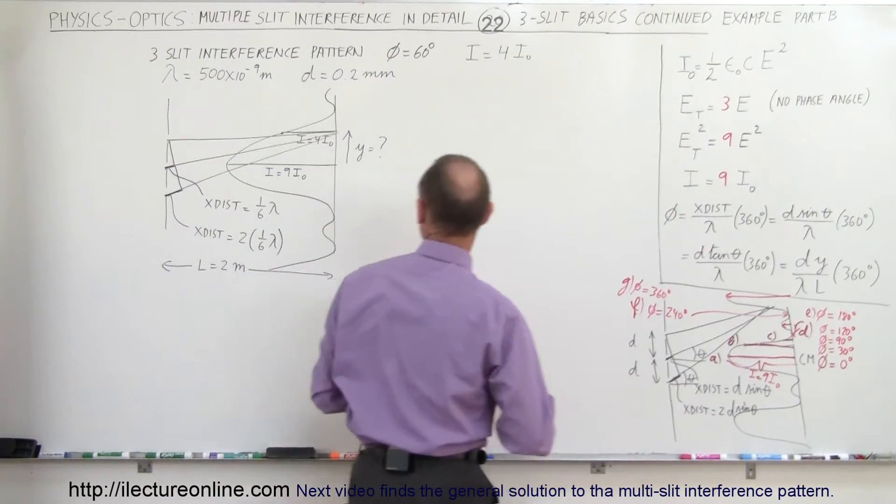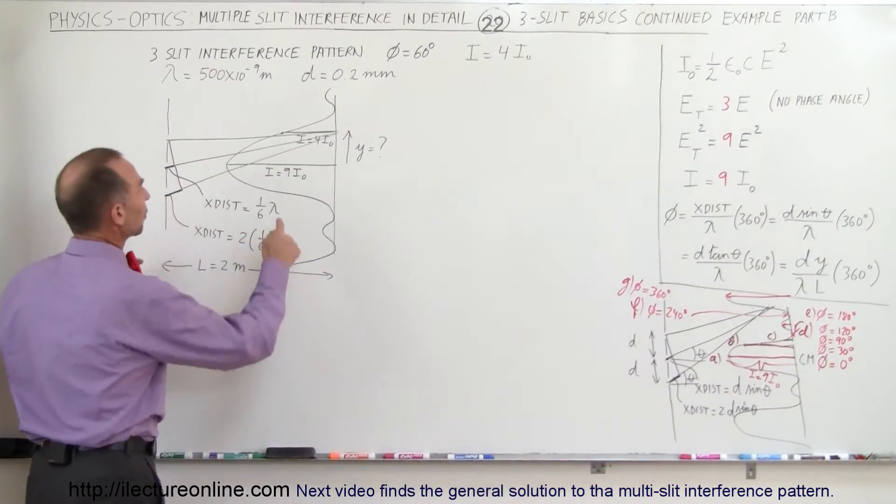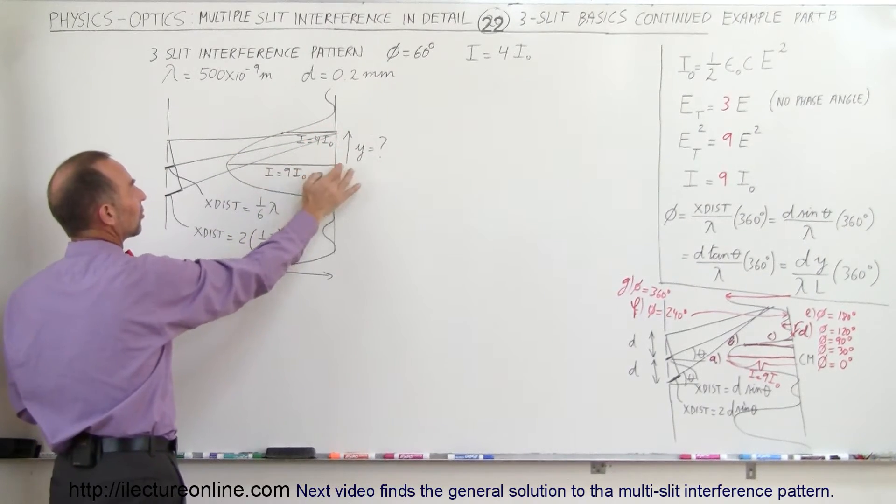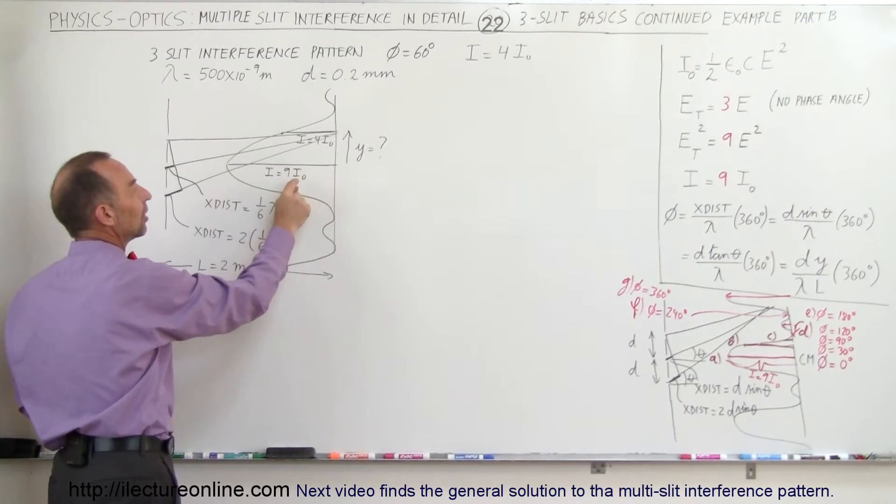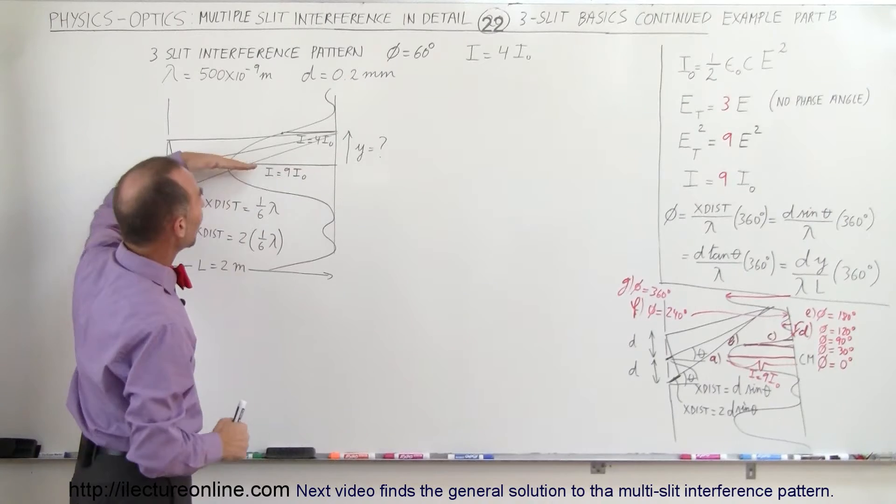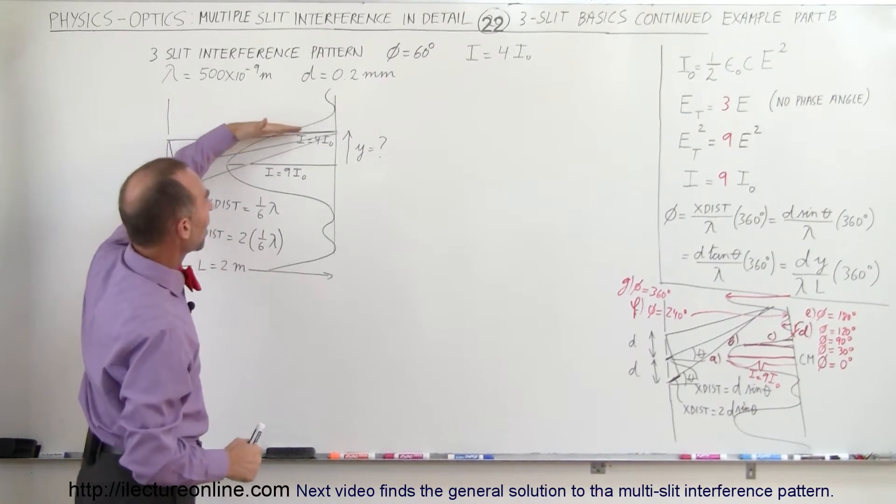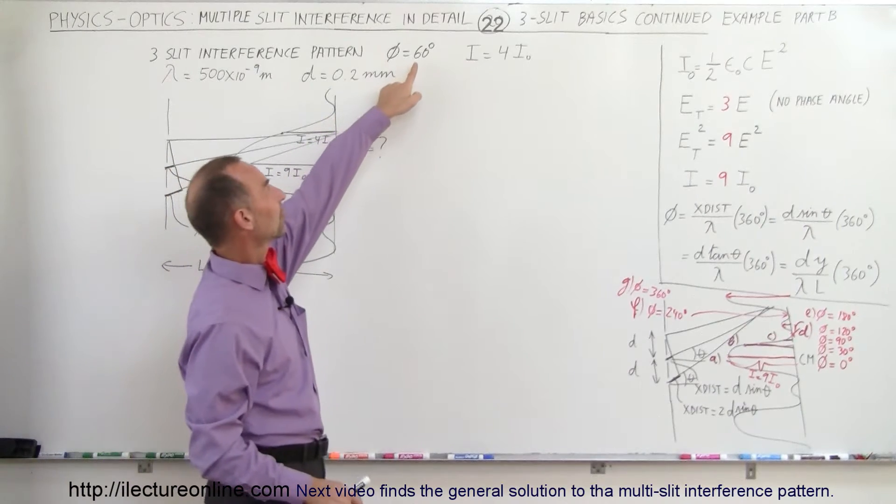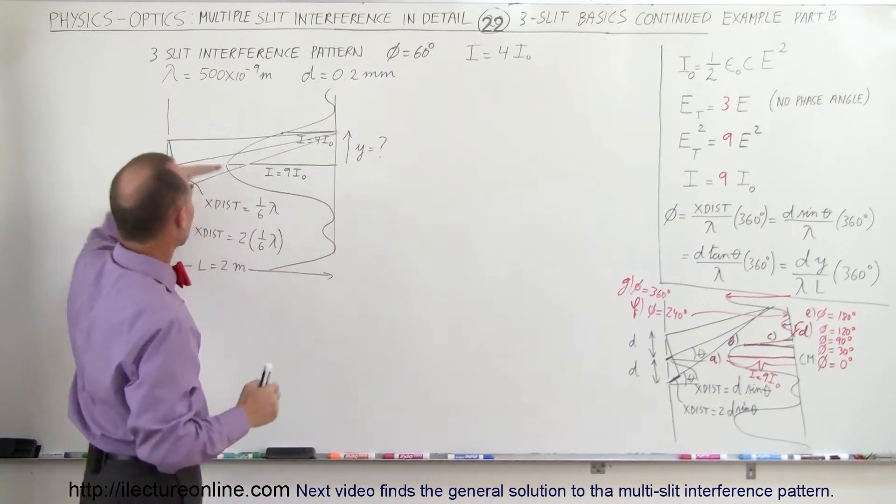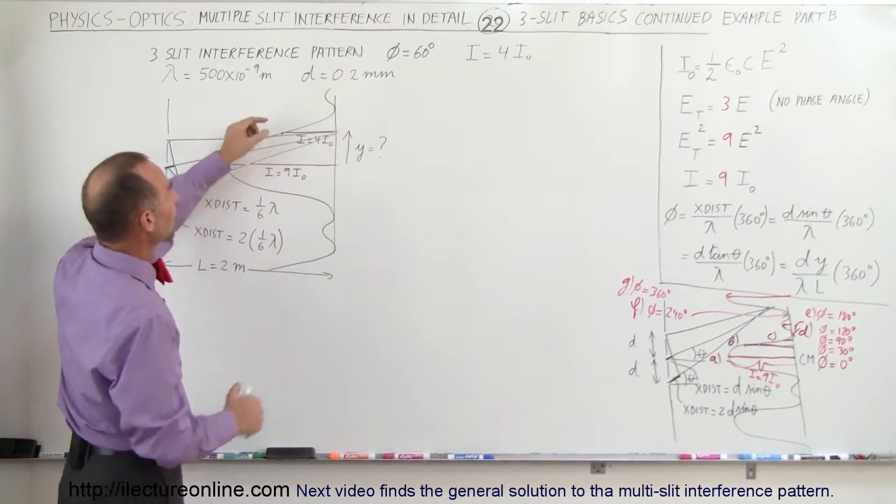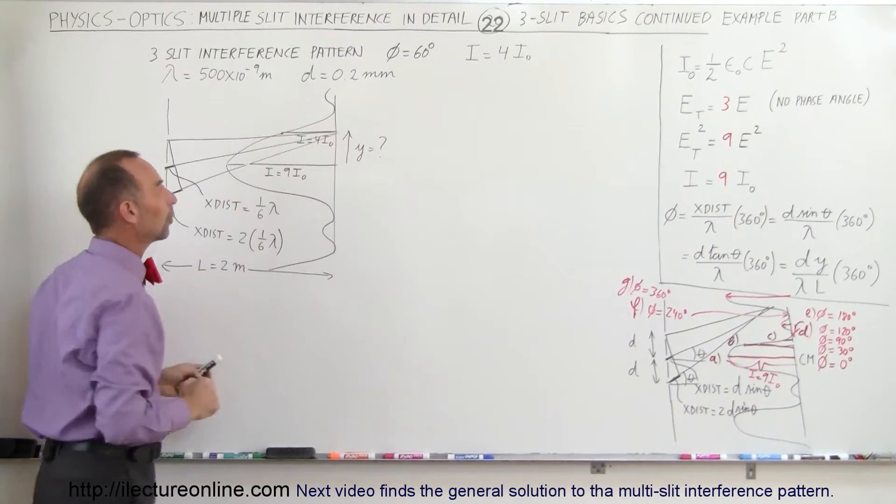Notice that we have the situation here where we're probably somewhere on the central maximum, but not quite in the center. In the center, the intensity is nine times the intensity of a single wave, and you can see that as you go further and further out, the intensity drops off, eventually gets zero intensity, but with a phase angle difference of 60 degrees between the adjacent rays, we can see that at this point we have the intensity equal to four times the intensity of a single wave.